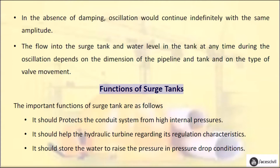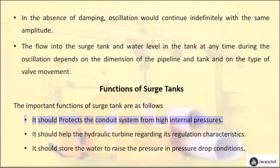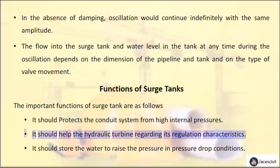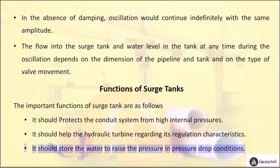Functions of surge tanks: The important functions of a surge tank are as follows. It should protect the conduit system from high internal pressures. It should help the hydraulic turbine regarding its regulation characteristics. It should store the water to raise the pressure in pressure drop conditions.